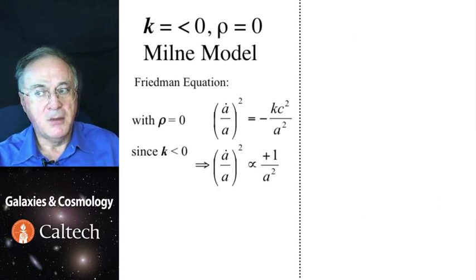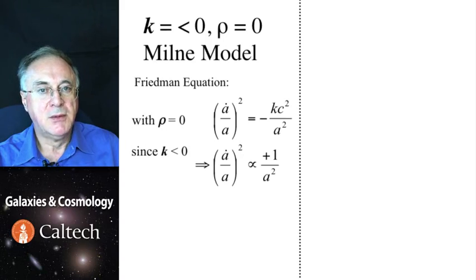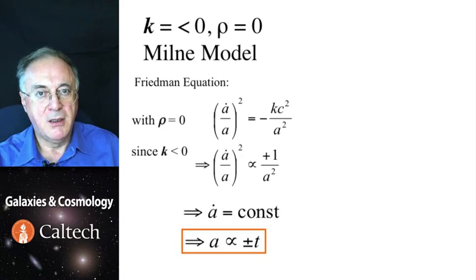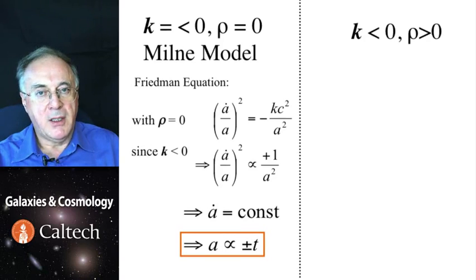So this is a spatially open negative curvature model with zero density. Its Friedman equation is shown here. And since the curvature constant is less than zero, we can see it here. Therefore, the time derivative of scale factor is constant. If it's constant, that implies a linear expansion. The universe expands as the first power of time. Or it can be contracting, since the square root can be of either sign.